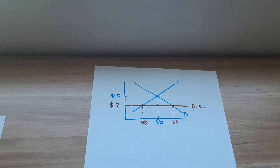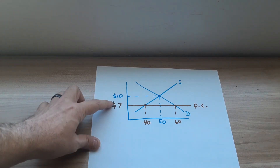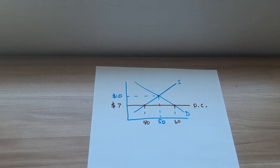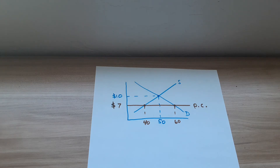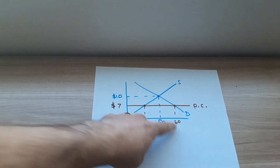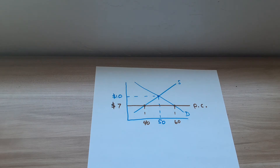Let's look at a price ceiling. A price ceiling is the highest price allowed by the law. In this graph, supply and demand determined a price of $10. The government said you can't charge more than $7 — that's why the price ceiling is set below equilibrium, saying you can't get back up to the equilibrium price of $10. This is supposed to help consumers by artificially lowering the price, though it really doesn't help very much in many cases. There will be 40 units supplied and 60 demanded, so there's a shortage of 20 units.